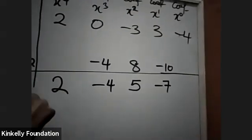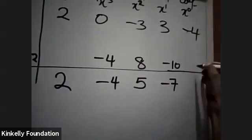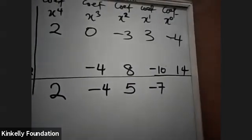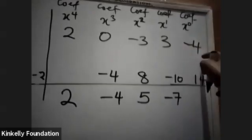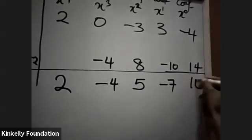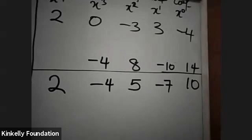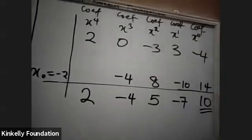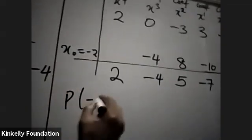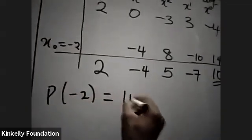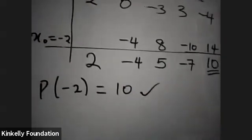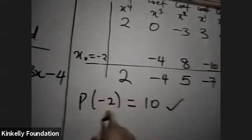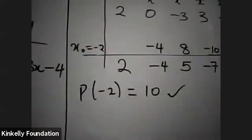Now, minus 2 times minus 7 is positive 14. Now, minus 4 plus 14 is positive 10. So our answer is: the polynomial at p(minus 2) is equal to 10. What you mean by p(minus 2) is that you replace s with minus 2.